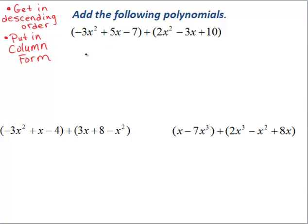Now in order to do this, let's take the first polynomial expression. We know that it's already in descending order, so that's perfect. The second one is also in descending order, so now all we need to do is write this in column form. And this is how we do it: negative 3x squared plus 5x minus 7, and then right below it we will write plus 2x squared minus 3x plus 10.